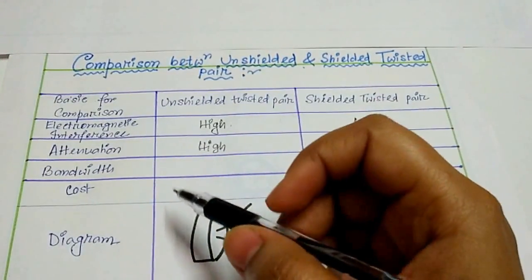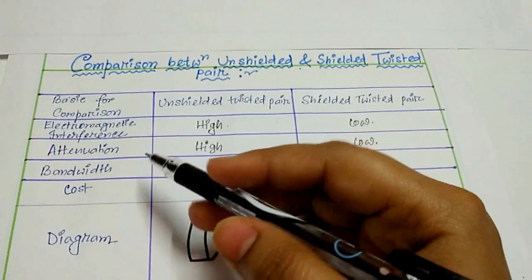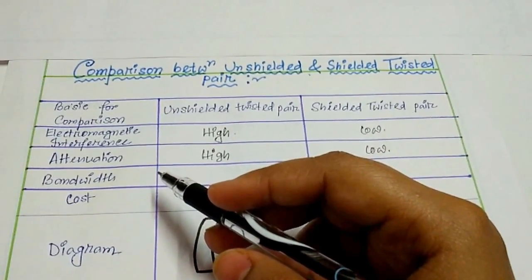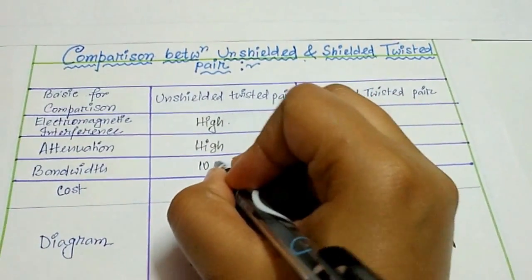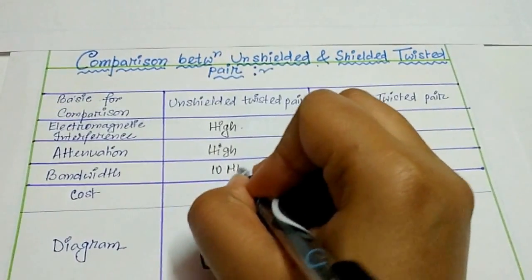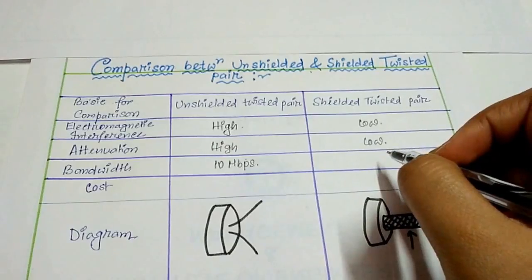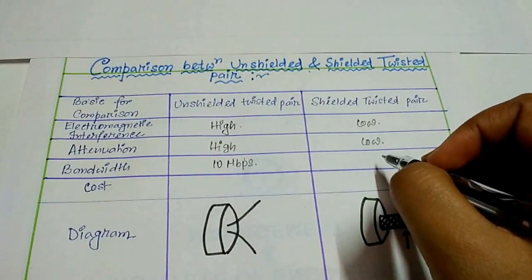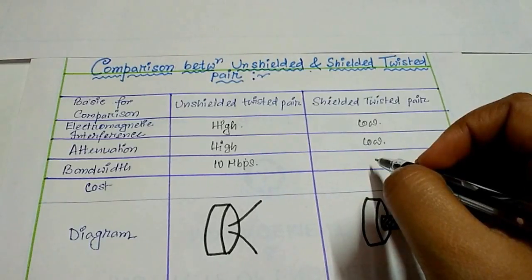Now comes bandwidth. The bandwidth of unshielded twisted pair is 10 Mbps and for shielded twisted pair the bandwidth is 16 Mbps.